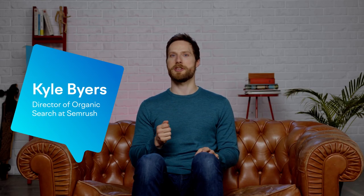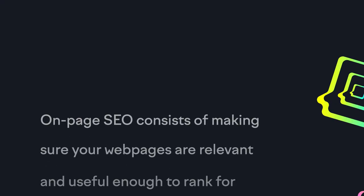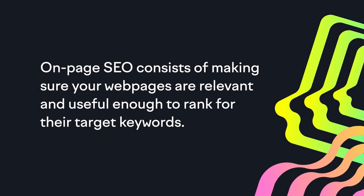In this video, I'll show you how to do some of the most important aspects of on-page SEO. When it comes to SEO, this is where the rubber meets the road. On-page SEO consists of making sure your webpages are relevant and useful enough to rank for their target keywords. It includes how and where to use your target keywords on a webpage, and more generally, what to actually put on that webpage in order to appeal to both Google and visitors.